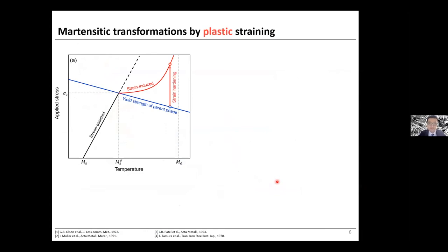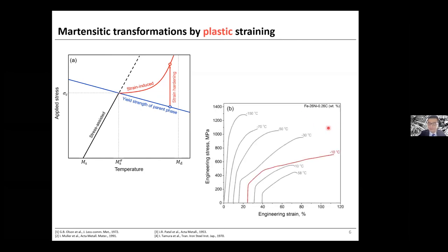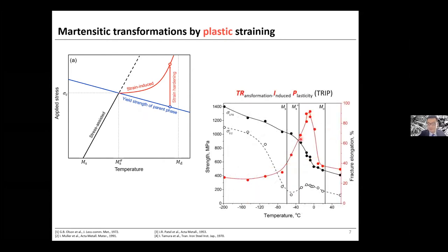Apart from thermal quenching, another way to manipulate martensitic transformation is to use plastic straining. If we tune the chemistry of our alloy such that the martensite start stress is higher than the yield strength of the parent phase, what we get in terms of mechanical properties is an enormous increase in fracture elongation while still maintaining a decent strength — as shown in this curve. This effect, making use of strain-induced martensitic transformation, is documented as the transformation-induced plasticity, or TRIP, effect.